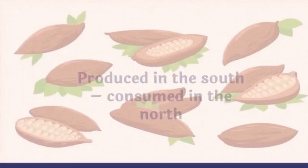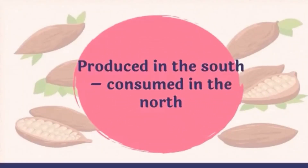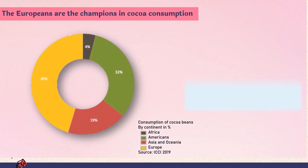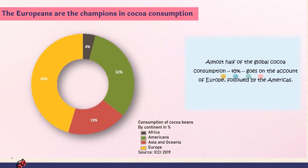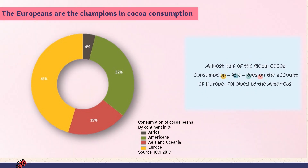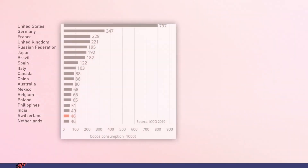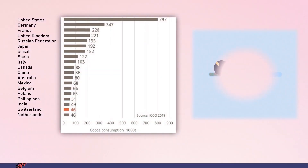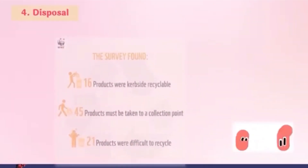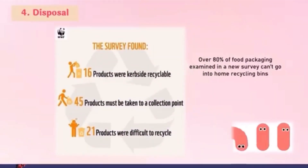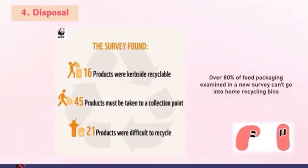Did you know that cocoa is produced in the south but consumed in the north? Europeans are the champions in cocoa consumption — almost half of global cocoa consumption, 45%, goes to Europe, followed by the Americas. However, as a single country, the United States consumes the most cocoa-based products: 797,000 tons, ahead of Germany and France.